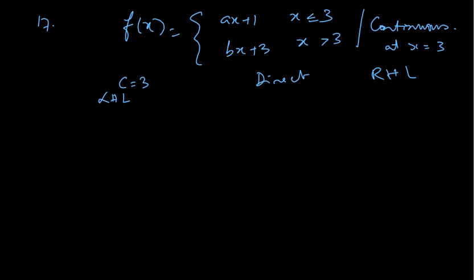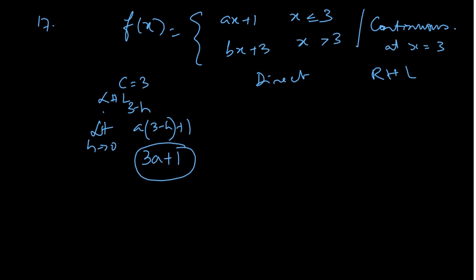LHL is nothing but limit h tends to 0 of f(3 minus h) — that falls in the first piece — so A into (3 minus h) plus 1. When h equals 0, you get 3A plus 1. Direct value means putting x equals 3, so you also get 3A plus 1.